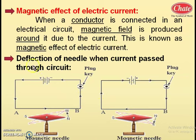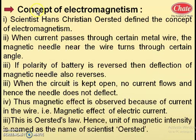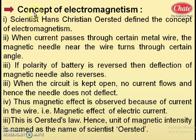This is one activity-based concept: deflection of needle — needle deflects when current passes through the circuit. This is known as electromagnetism. Why? Because here, magnetism is produced by means of electricity. Hence it is named electromagnetism. Let us study the concept of electromagnetism based on our previous activity.